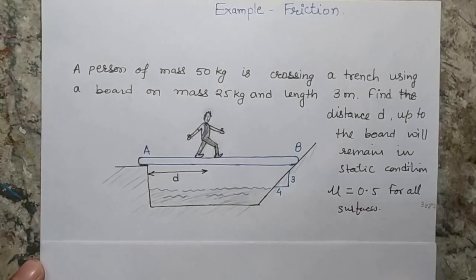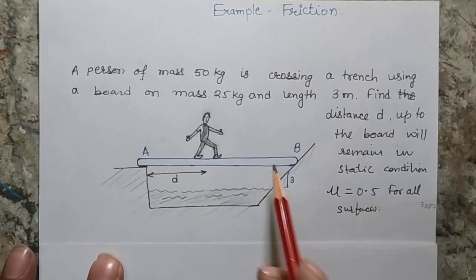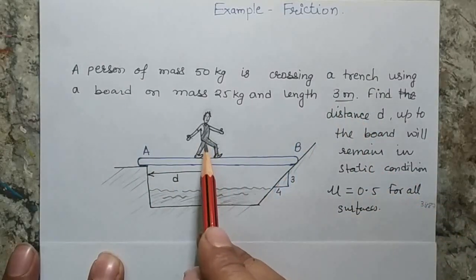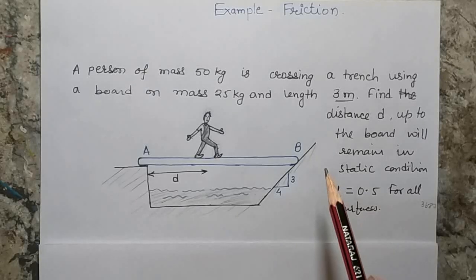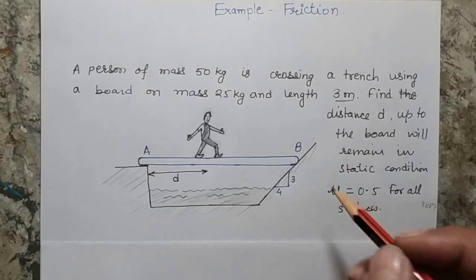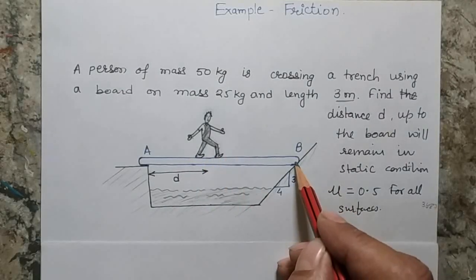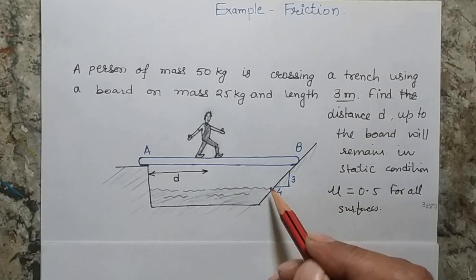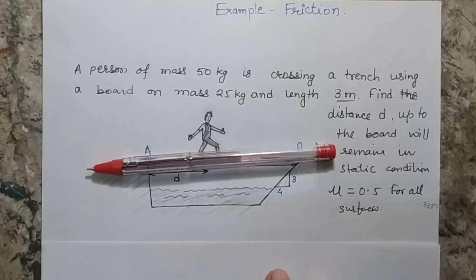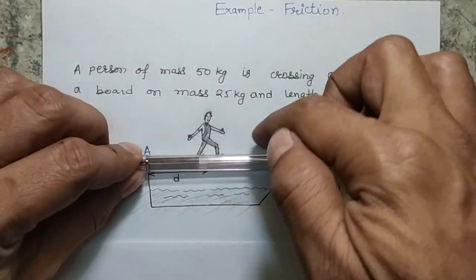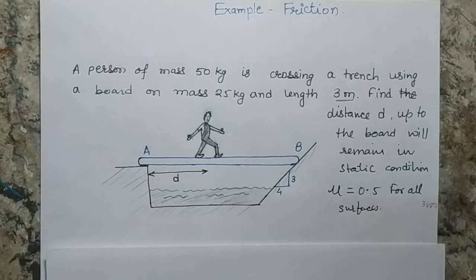This is an interesting problem of friction. A person wants to cross a trench using a board. The length of the board is 3 meters and the mass of the person is 50 kilograms. The person starts walking from point A towards point B. The question is whether the person will be able to cross the complete trench, since one end of the board rests on an inclined surface. As the person moves forward, the sliding force increases, and if the frictional grip is not strong enough, the board will slide into the trench.